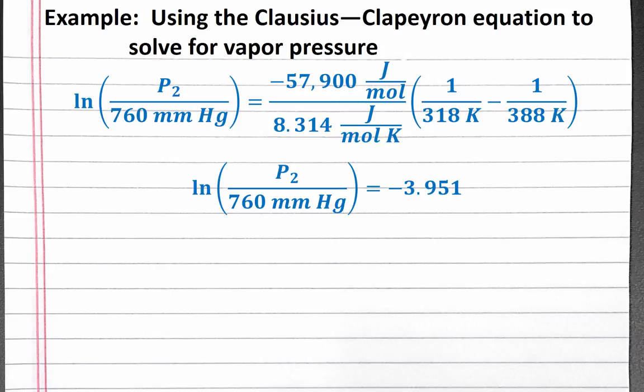To get rid of the natural log on the left, we'll take e to the power of each side of the equation. e raised to the power of the natural log is just what's inside the natural log. On the right, e to the power of negative 3.951 should be 0.0192. Notice this is still a unitless number.